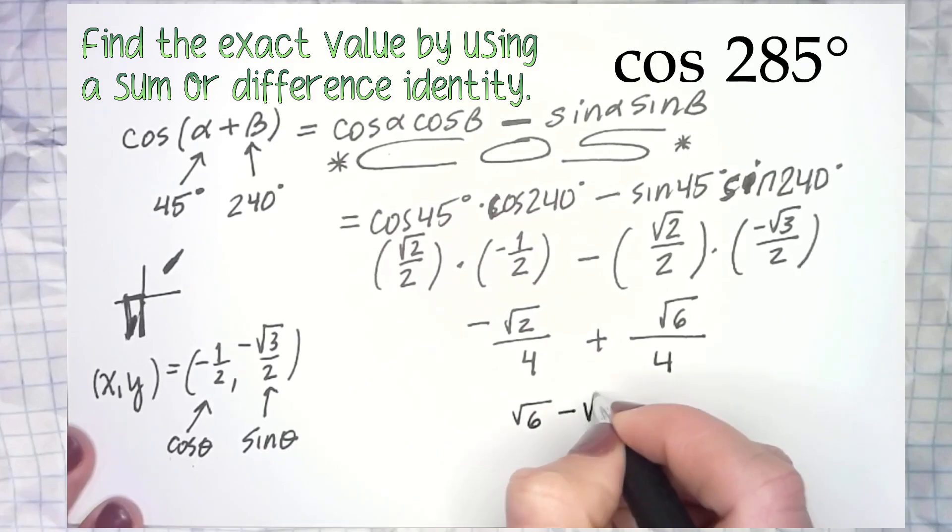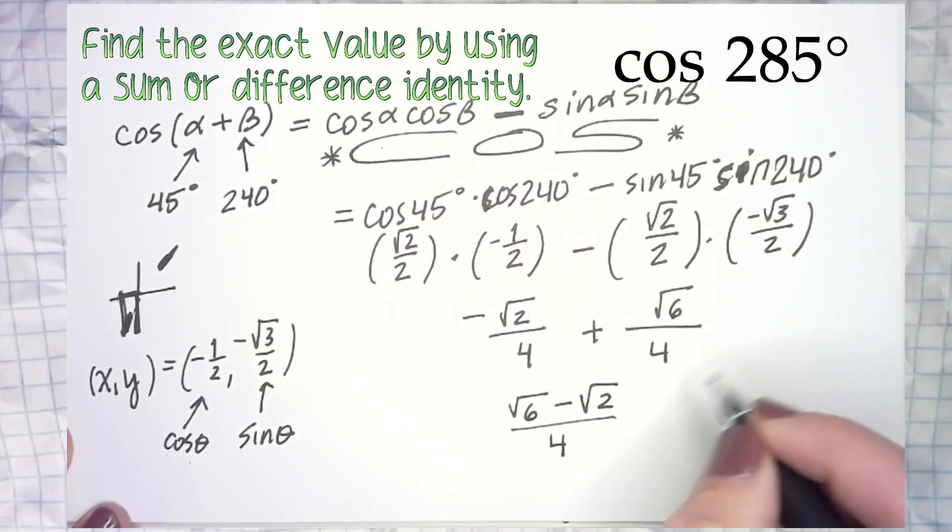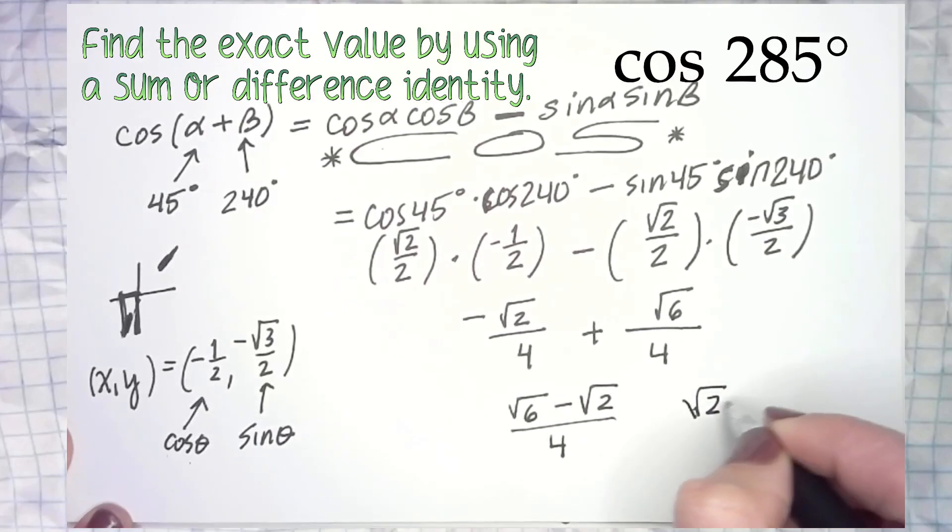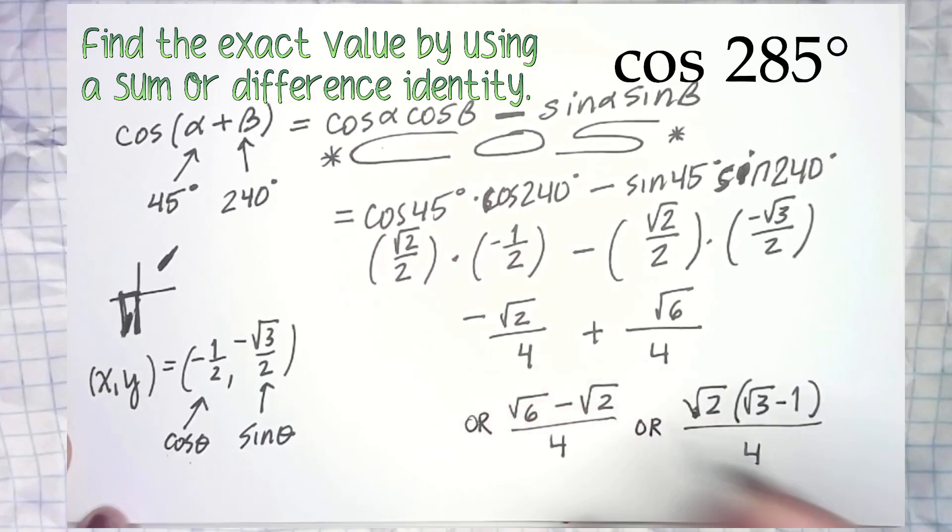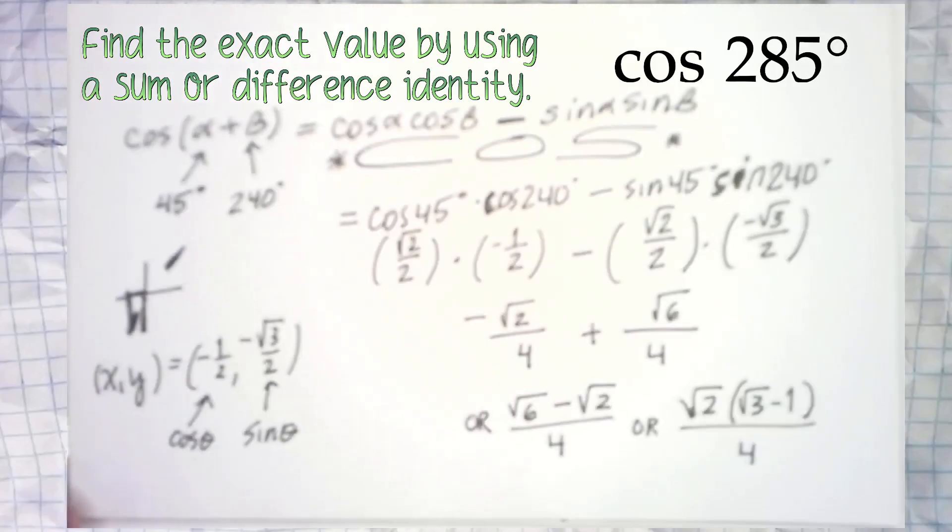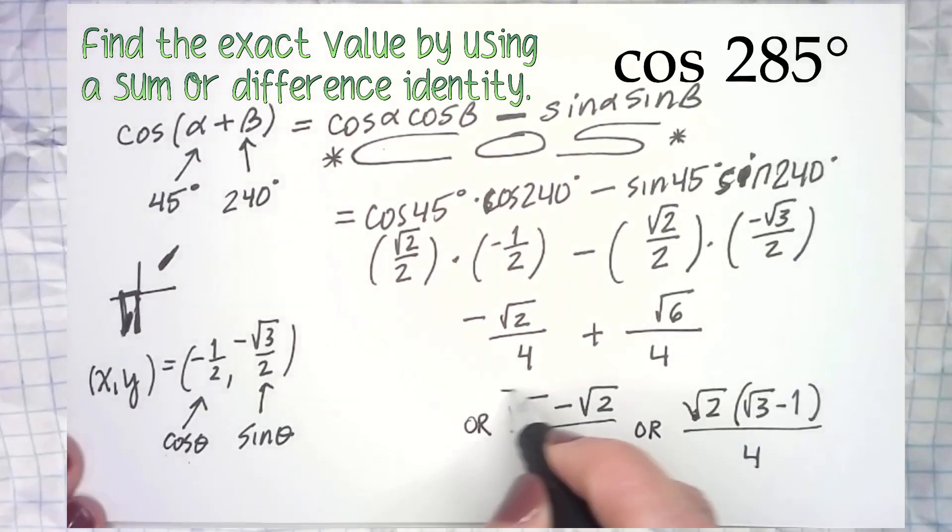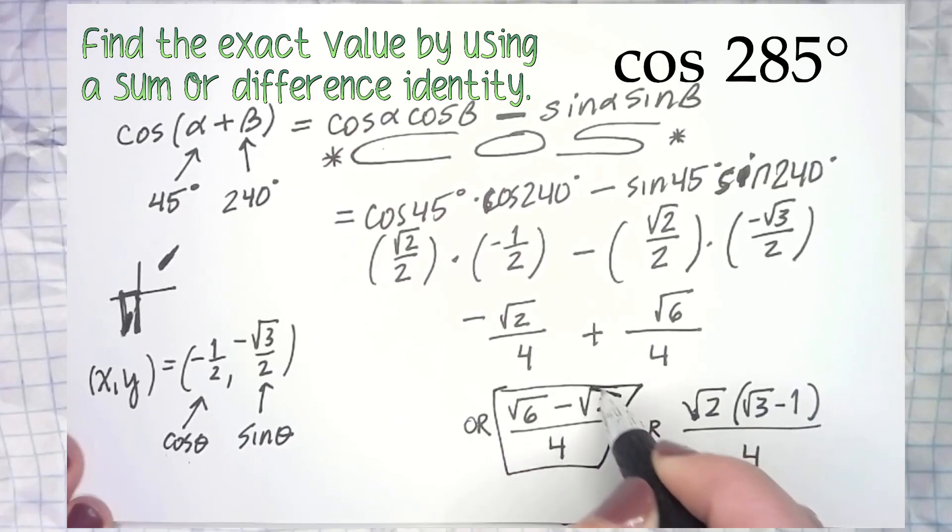Maybe you want to write it like that. Maybe you want to factor the root 2 out, and then that leaves you with root 3 minus 1 inside, and put that over 4. All of these are the same answer. They're all great. I would probably personally write it like this myself.